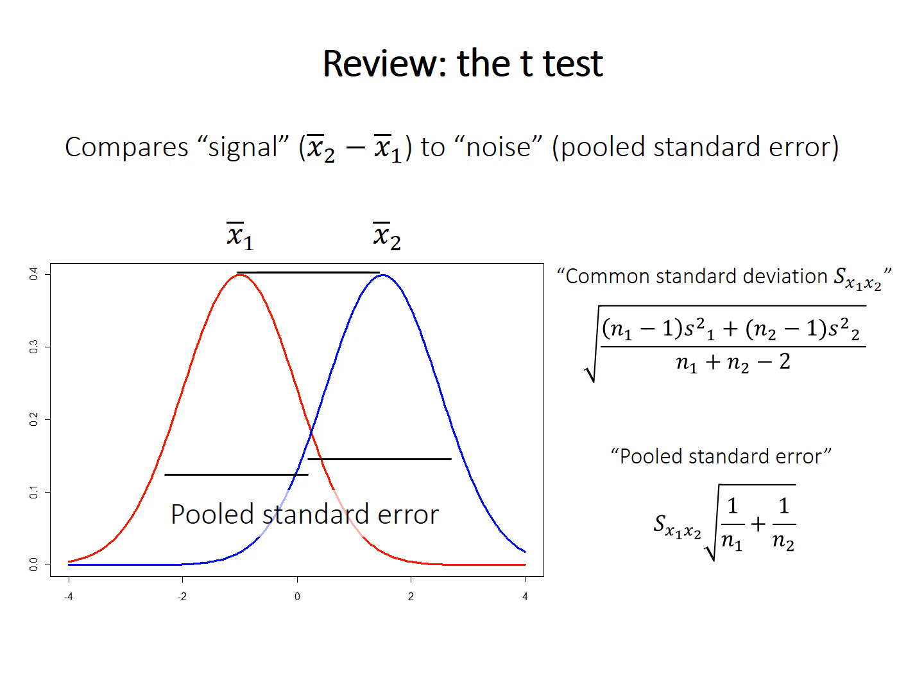First, let's briefly review the t-test. The test statistic compares the signal — the difference between sample means — to the noise, which is the pooled standard error of the samples. The t-test assumes both samples are normally distributed, and measures like mean and standard error are only meaningful when the data are normal. So the t-test is not appropriate when one or both variables are non-normal, especially when they're skewed.